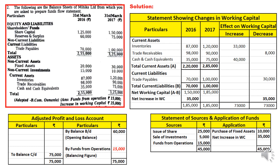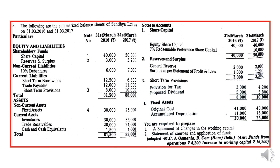Now I will take a slightly lengthier question. This question has notes to accounts. Bear in mind that notes to accounts are always part of the balance sheet — they further elaborate the contents under a particular head. For example, under share capital, note number one shows two types of shares: equity and preference. Under reserves and surplus, note number two shows general reserve and P&L account. Notes to accounts provide further classification and elaboration — they are part of the balance sheet, not adjustments. Adjustments are a different item. In all three questions here, there are no adjustments; adjustment-related problems will be covered in video number four.